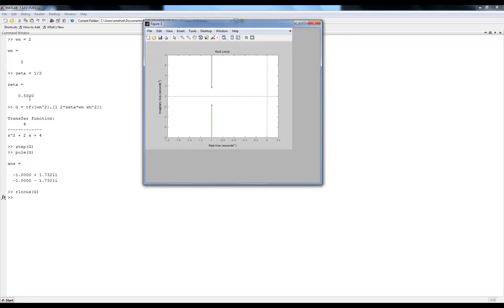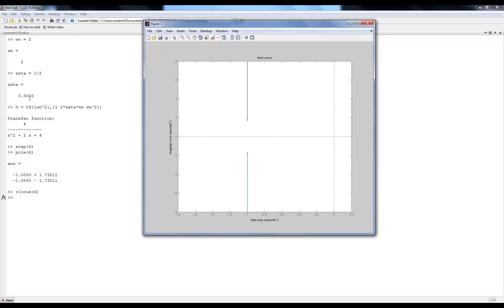Now, what we notice from this plot is that the poles start at the open loop location of the poles, so minus 1 plus or minus 1.7 j. And then as kp increases, the imaginary part goes off to plus or minus infinity, but the real part stays the same. Now the question is, can we verify this result analytically?